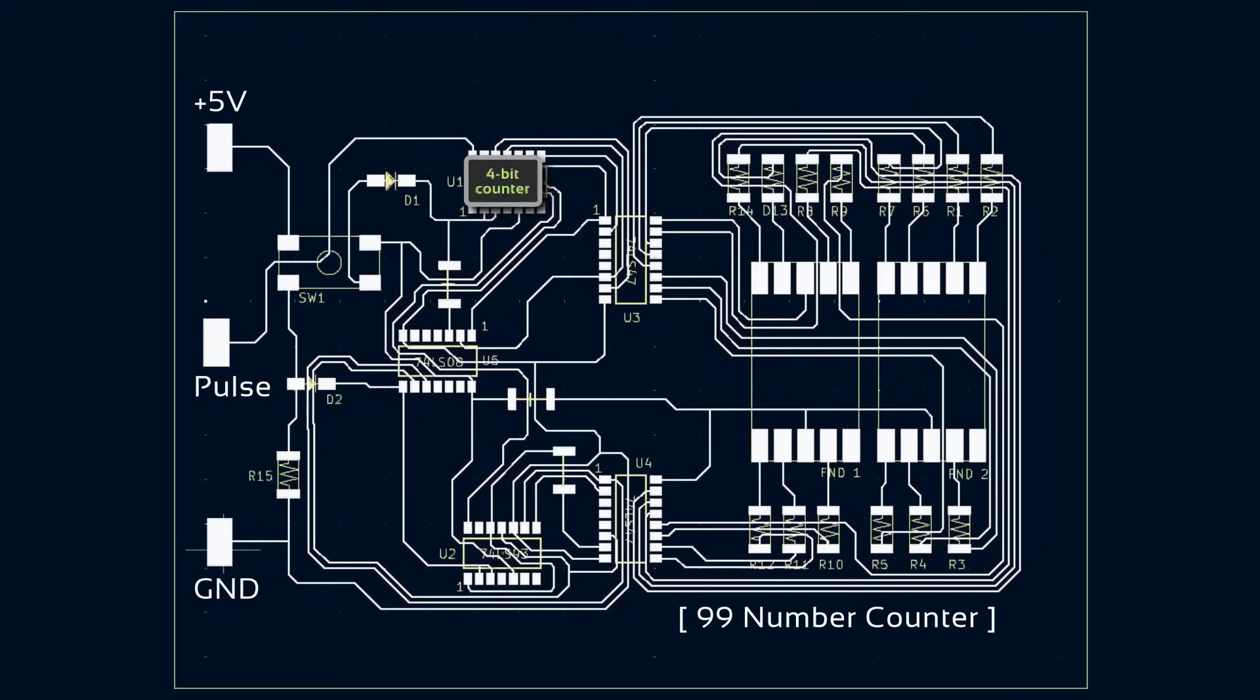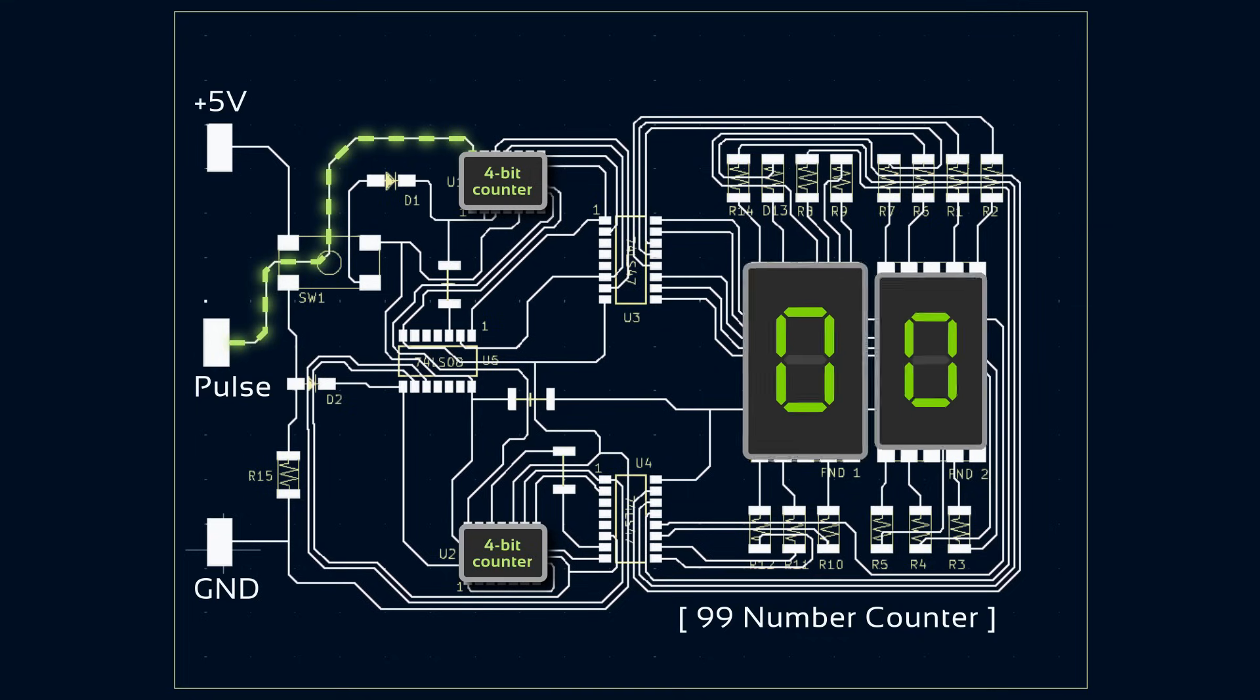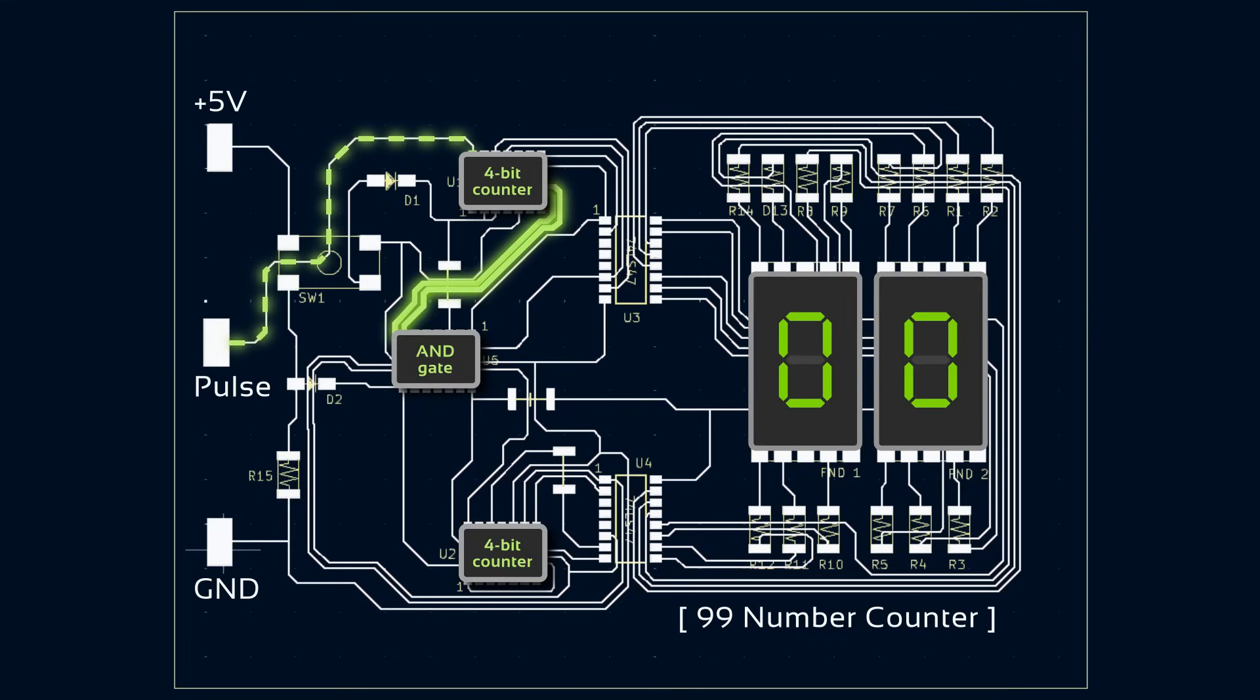This circuit first uses two 4-bit counters. The first 4-bit counter receives the pulses that were generated in the previous board. The counter was configured into a basic hexadecimal counter, which then utilizes an AND logic gate to reset at 9 instead of 15. This will output the number of our unit place, also known as the numbers in the 1s place.